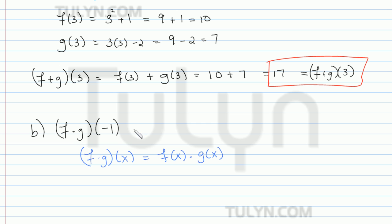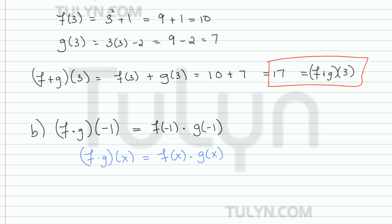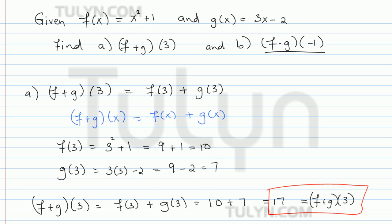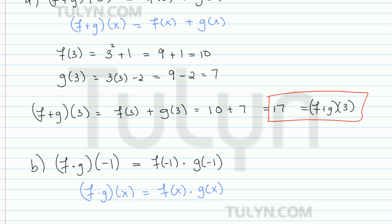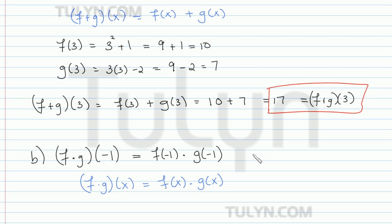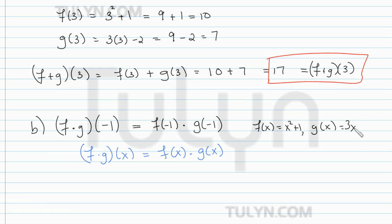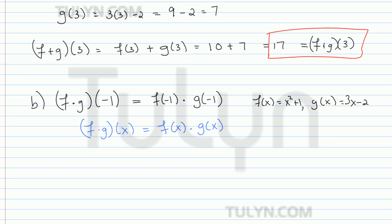So f times g of negative 1 is going to be f of negative 1 times g of negative 1, right? So let's remind ourselves what f and g were. Let's rewrite it over here. So f of x is x squared plus 1. And g of x was 3x minus 2.